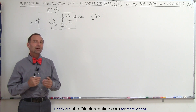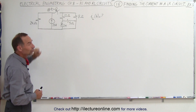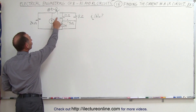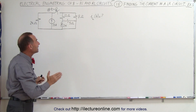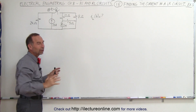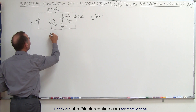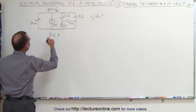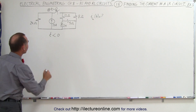Welcome to ElectronLine. In this third example, we see that we have a current source instead of a voltage source. Again, we have a switch. In this case, it opens at time equals zero. So what we need to do first, to find the initial current through the inductor, we need to draw the circuit the way it looked before the switch opens — that means when T is less than zero, when the switch is closed.